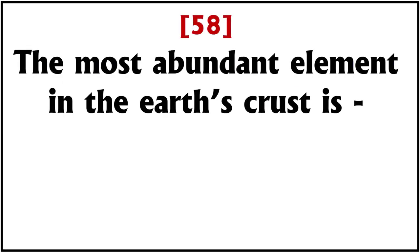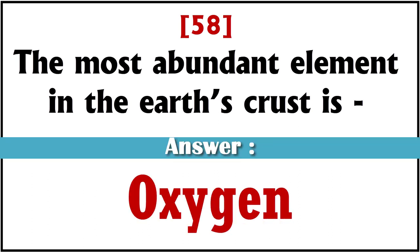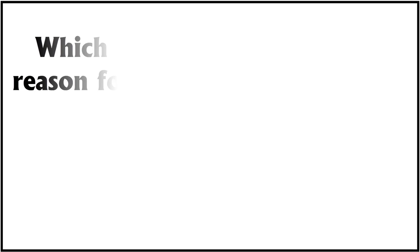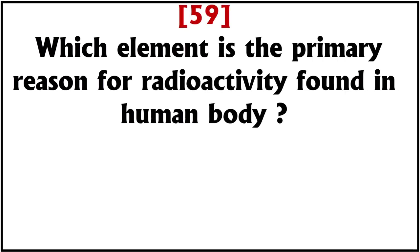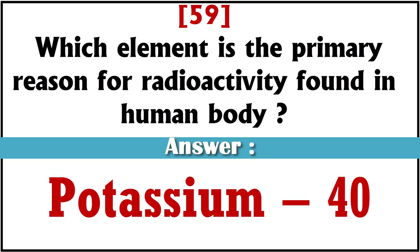The most abundant element in the earth's crust is? Answer: oxygen. Which element is the primary reason for radioactivity found in the human body? Answer: potassium-40.